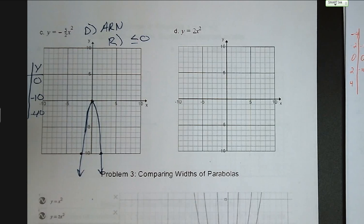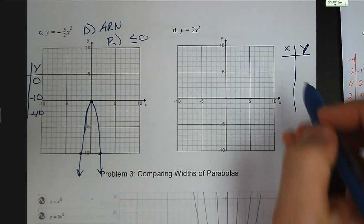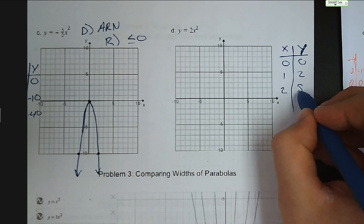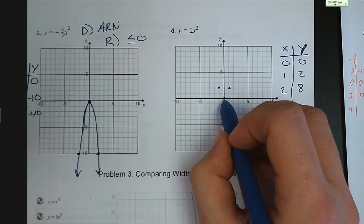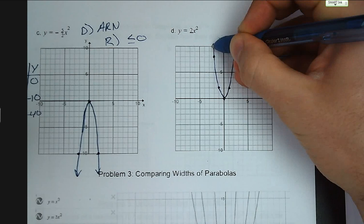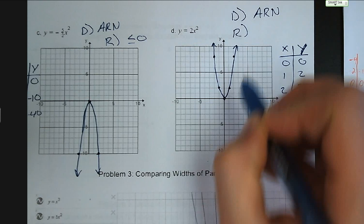Letter D: y equals 2x squared. We plug in 0, 1, and 2. 0 squared times 2 is 0. 1 squared times 2 is 2. 2 squared times 2 is 8. We put a point at 0, 0; 1, 2; negative 1, 2; 2, 8; and negative 2, 8. Our domain is all real numbers, and our range is greater than or equal to 0.